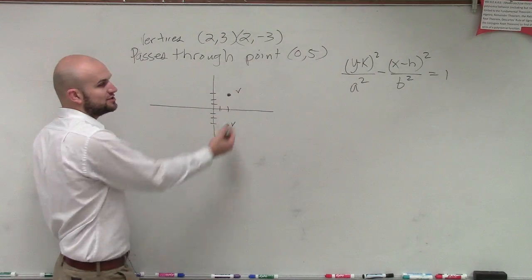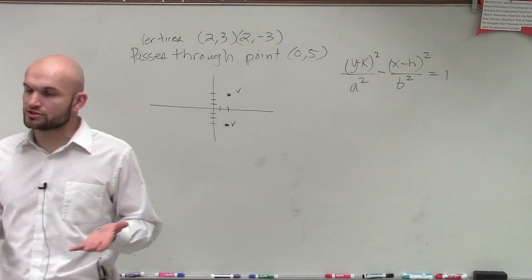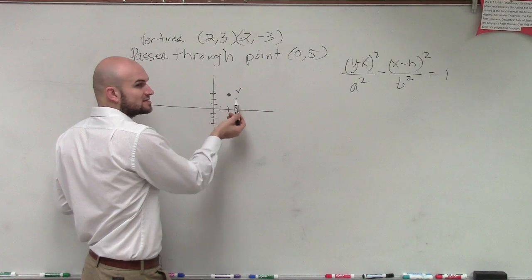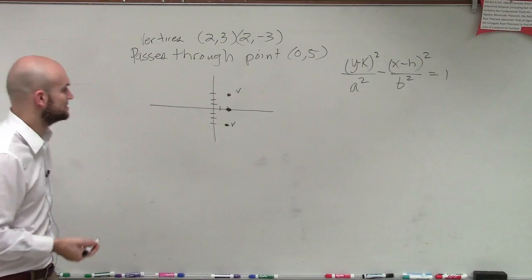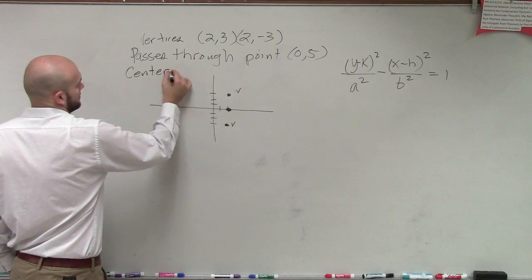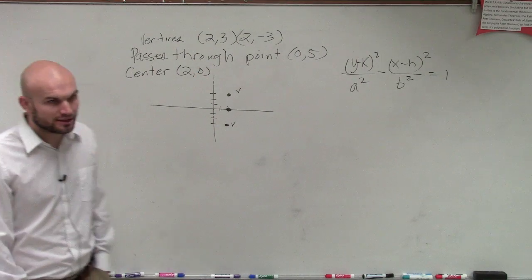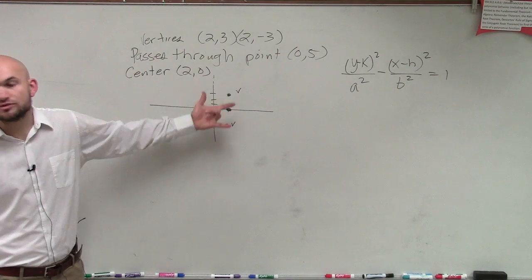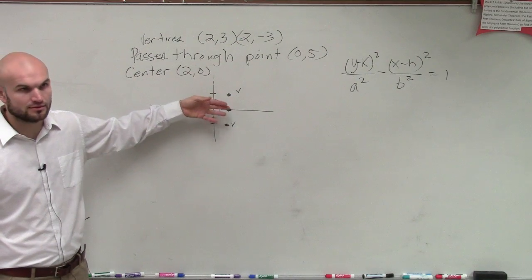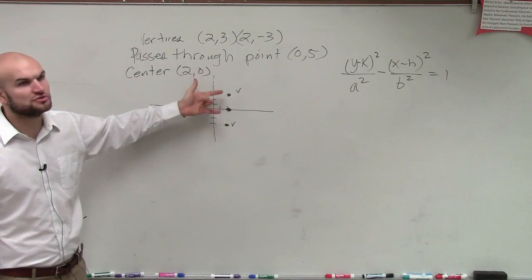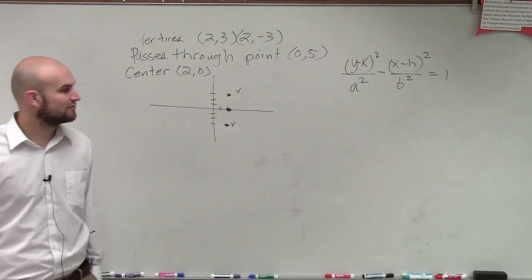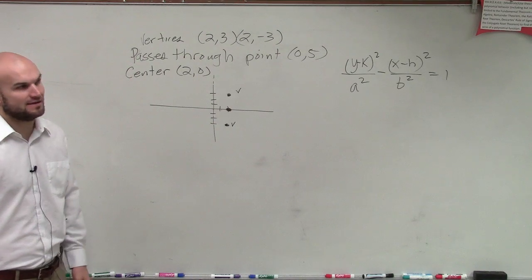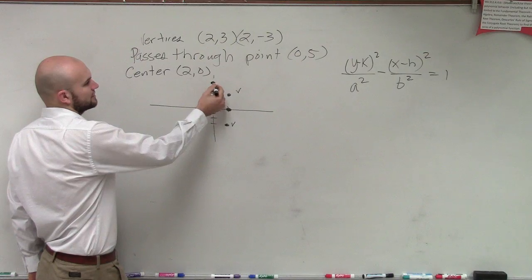Now, if here are my two vertices, we know right directly between the two vertices is going to be the center. So I notice how far is the distance of my two vertices? 1, 2, 3, 4, 5, 6. Half of that is where the center is going to be. So I can say the center is at 2 comma 0. The center is directly between the two vertices. It's also directly between the two foci. So if you know what the two vertices are or if you know what the two foci are, you can find the center. You can also just use the midpoint formula between those two points. So now we know what the center is. And they say it also goes through a point 0 comma 5, which is like 1, 2, 3, 4, 5.